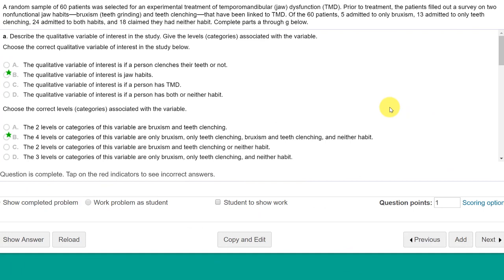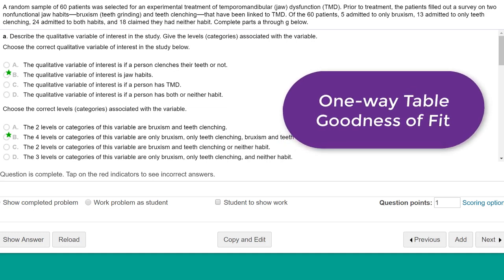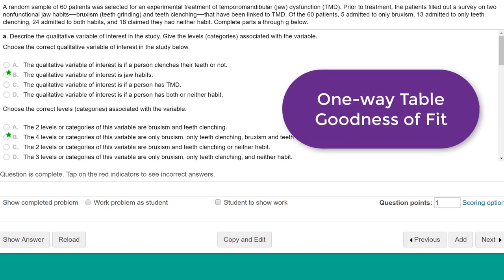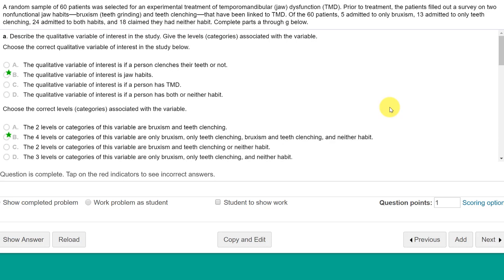Hi, this is Dr. Don. I have a problem out of chapter 10 on chi-square tests for categorical variables. This problem is a one-way table, or what I prefer to call a goodness-of-fit test. And how do I know that?